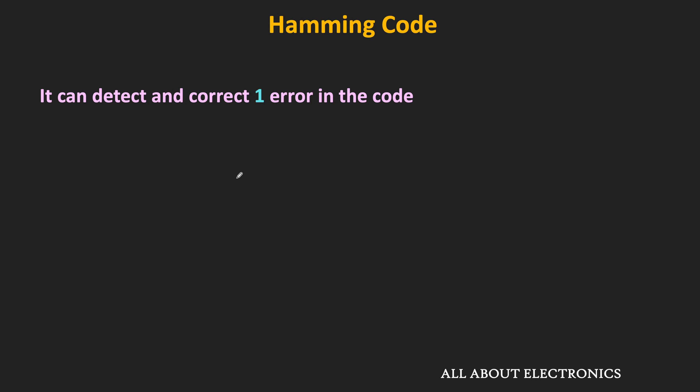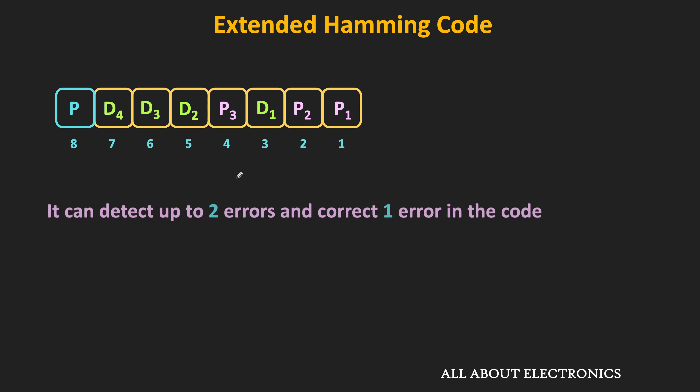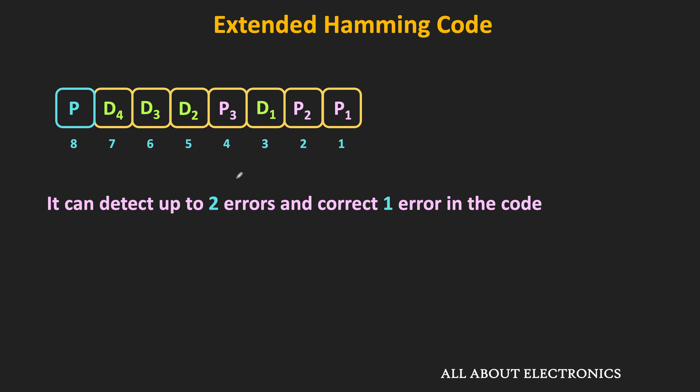Using this Hamming code, it is possible to detect and correct 1 bit of error. But if there is an error in 2 bits, then this code corrects it wrongly. However, this can be avoided by using an extra parity bit. This Hamming code with the extra parity bit is known as the extended Hamming code, which can correct 1 error and detect up to 2 errors.